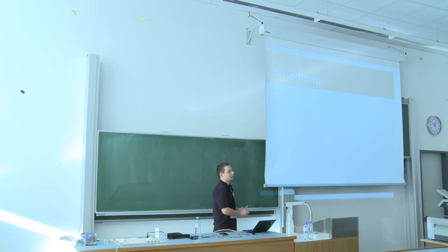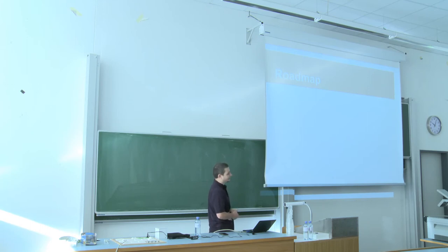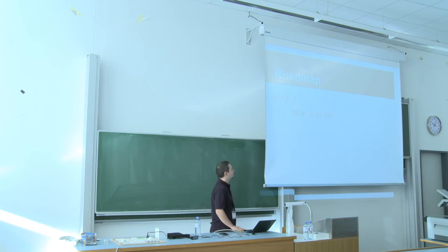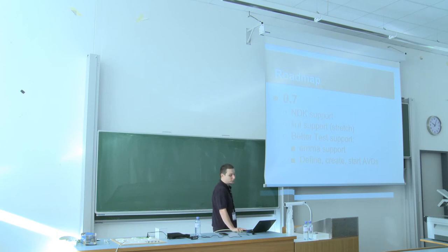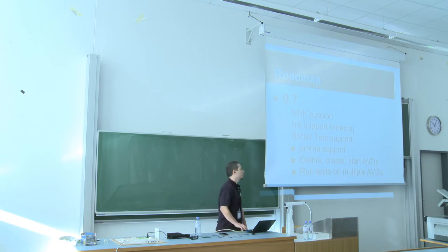We have a roadmap for the Gradle project. When this talk was first made we were at version 0.1, and it went up to 0.5. Now we are at 0.6. Version 0.7 should finally get NDK support, more Lint support — Lint is already supported but should get wider support — better IDE integration, better test support, and support to define, create, and start emulators inside your build file so you can run tests on multiple emulators.